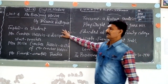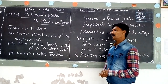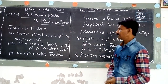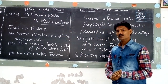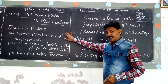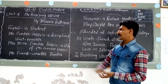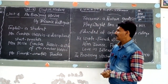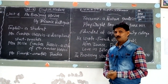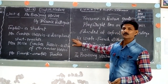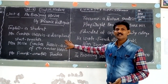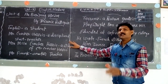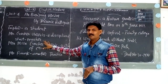Taplow is a student who behaves like an obedient student. He behaves this way because he knows that his teacher, Mr. Crocker-Harris, is a disciplined, strict, yet very caring teacher. Despite his strict attitude and approach, students are afraid of Mr. Crocker-Harris.